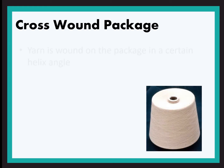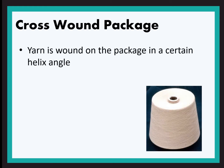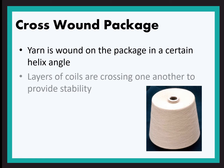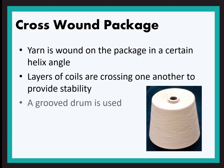Next is the cross wound package. In non-precision winding, a cross wound package is produced by coils that are laid in a helix angle. Comparatively a soft package is produced with good air gaps, so dyeing in package form becomes easier in cross wound packages. Unwinding is also easier and faster. For the crossing and traversing of the yarn, a groove drum is used.